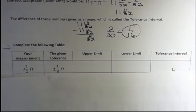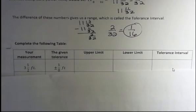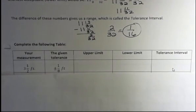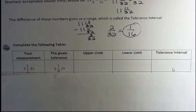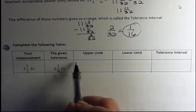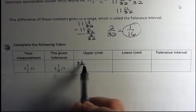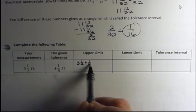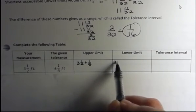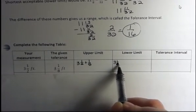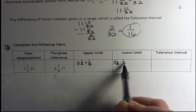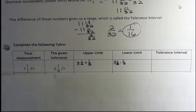So what we want to do on all of these, given our measurement and given the tolerance, we want to find the upper limit, the lower limit, and the tolerance interval. So I have 3½ as my measurement. My upper limit is going to be 3½ plus ⅛, and my lower limit is going to be 3½ minus ⅛. That should make sense to you. We're just subtracting or adding that amount to find those two limits.